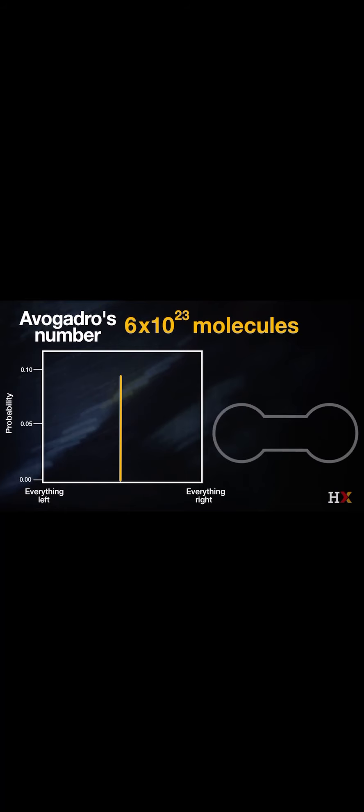which says that I'm going to have an equal number of molecules on the left-hand side, that is 3 times 10 to the 23 on the left-hand side, and 3 times 10 to the 23 on the right-hand side.